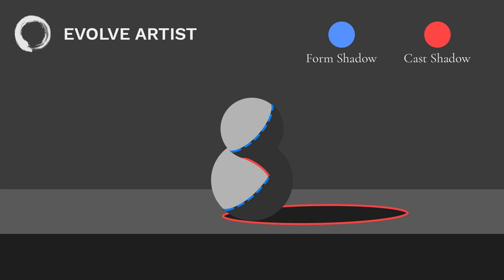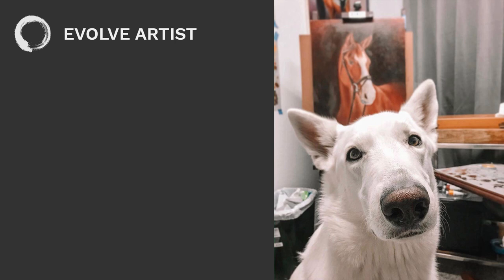Now let's talk about creating depth using edges. This is Simo, the studio dog of Piper Talladay — she's the head instructor at Evolve and she paints horses. I saw this image and thought it was perfect. Look at Simo's snout: it's super sharp. You can see all the detail, and then all of the edges get softer and softer as they recede into the distance.